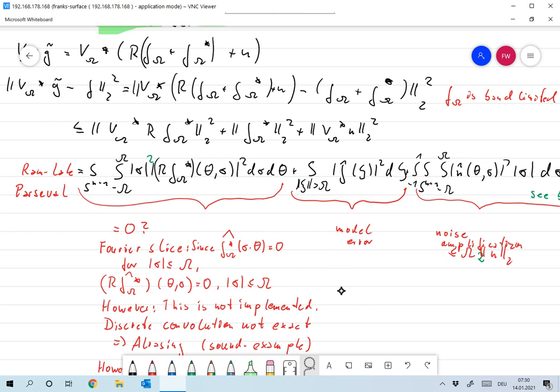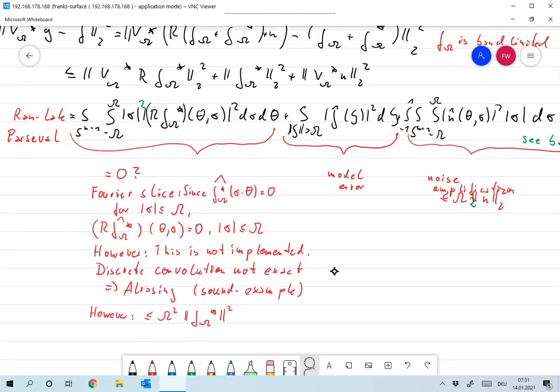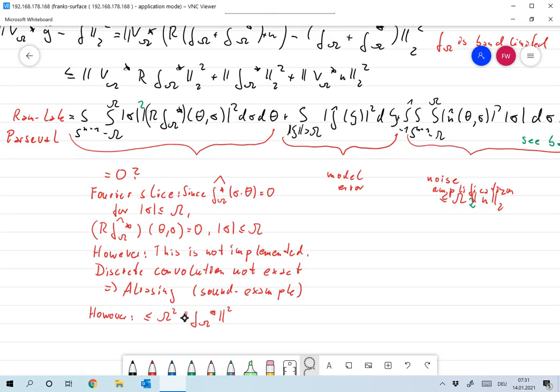We will have an additional error, and that additional error will be due to aliasing. That's what we had in the sound example. High frequencies are misinterpreted as low frequencies, so we have an additional aliasing error. However, finally this is smaller than omega squared times f_omega star squared, which goes to zero.